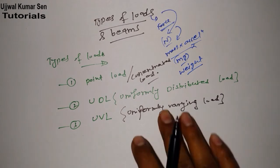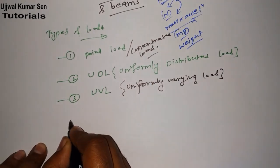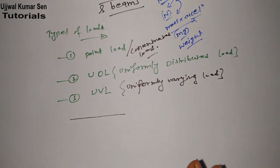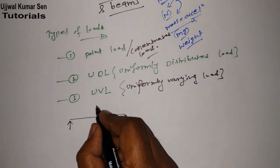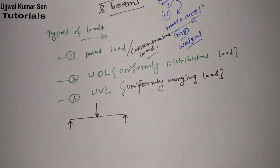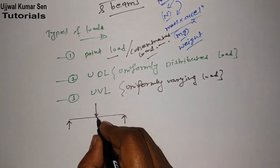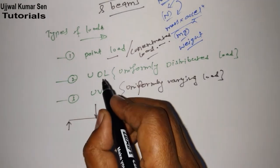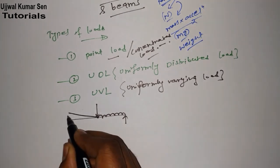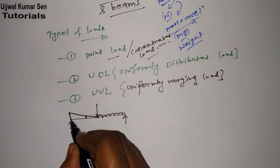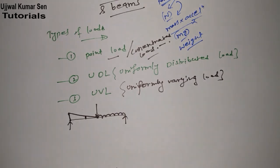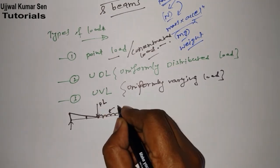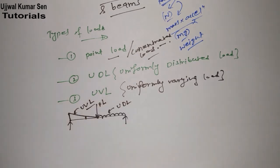So, point load: suppose we have a beam supported by two ends, and if there is a load acting on this beam at just one point, that is known as point load or concentrated load. If the load is uniformly distributed over the span of the beam, it is known as uniformly distributed load. If the load is varying from one end to the other — different load here, different load there — that is known as uniformly varying load. So this is point load, this is UDL, and this is UVL.